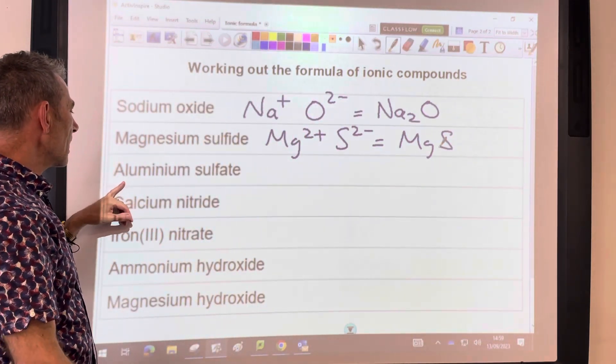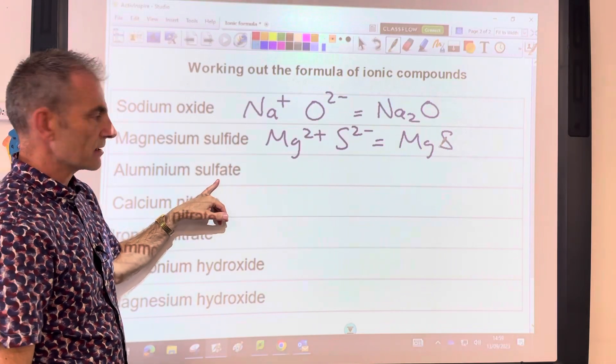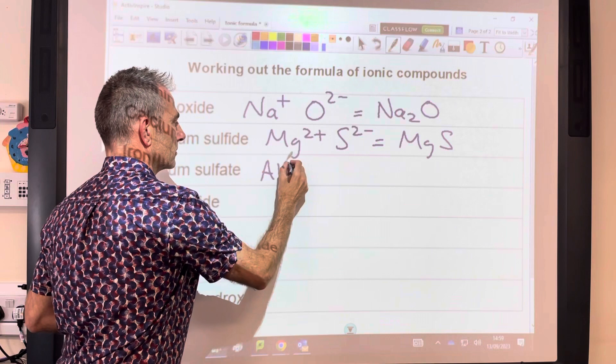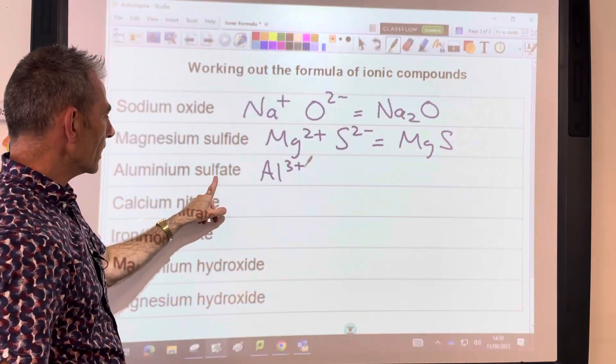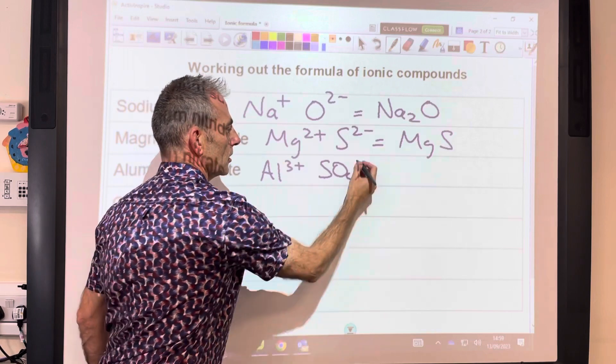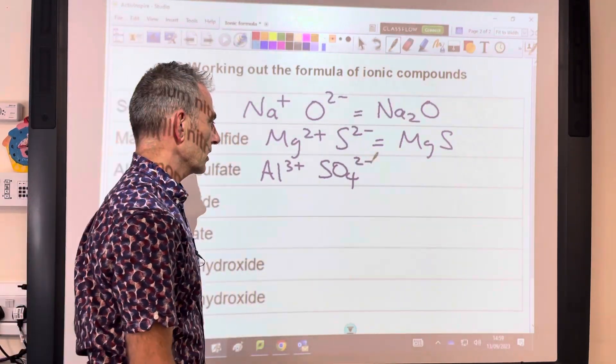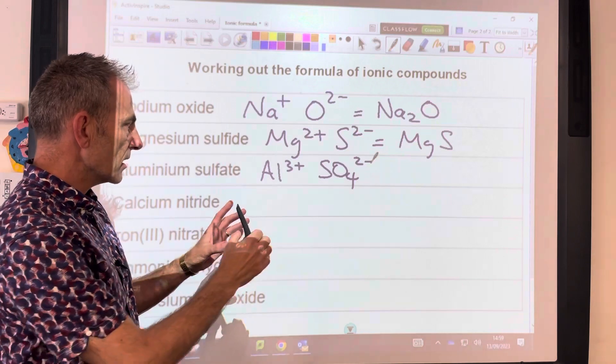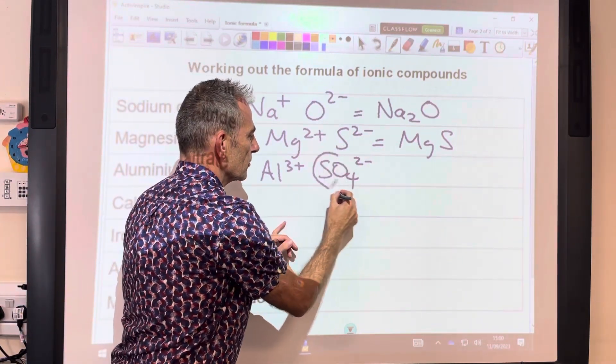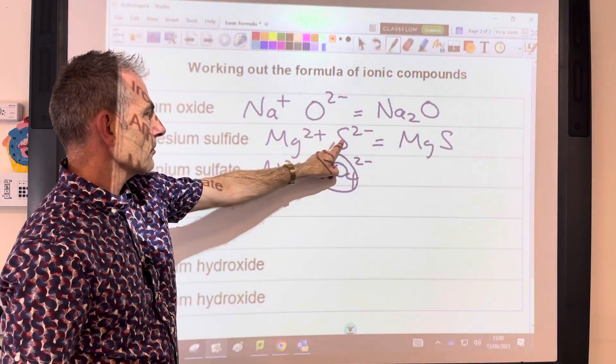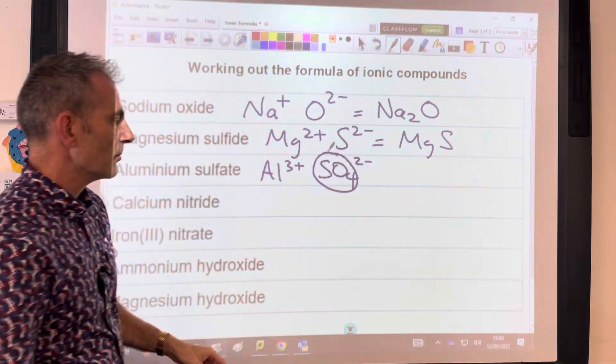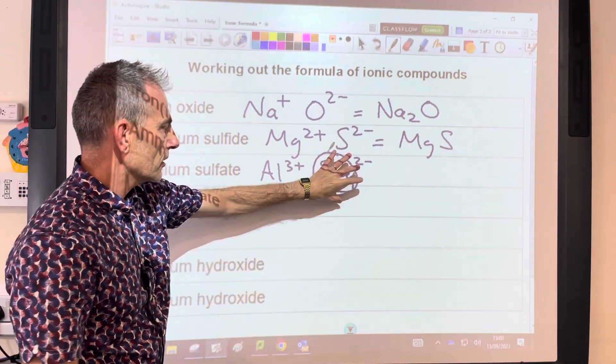The next one is aluminium sulfate. The ions present: aluminium is 3 plus, and the sulfate ion is a polyatomic ion, SO4, with a 2 minus charge. What I say to my students is, if it's polyatomic, just think of it as one thing. Just like that was one thing, that was one thing. Think of the sulfate ion, even though it contains more than one atom, just think of it as one thing.